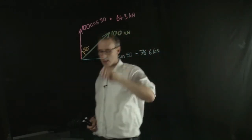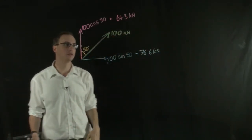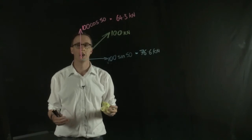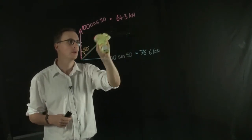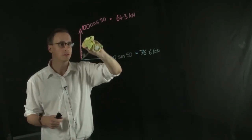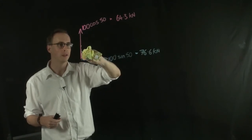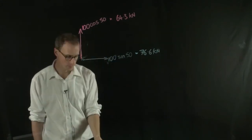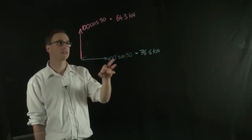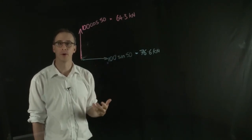So we can replace this 100 kilonewton force into a force diagram with just the vertical and the horizontal component. So you realize that these don't add up to 100. They're not supposed to.